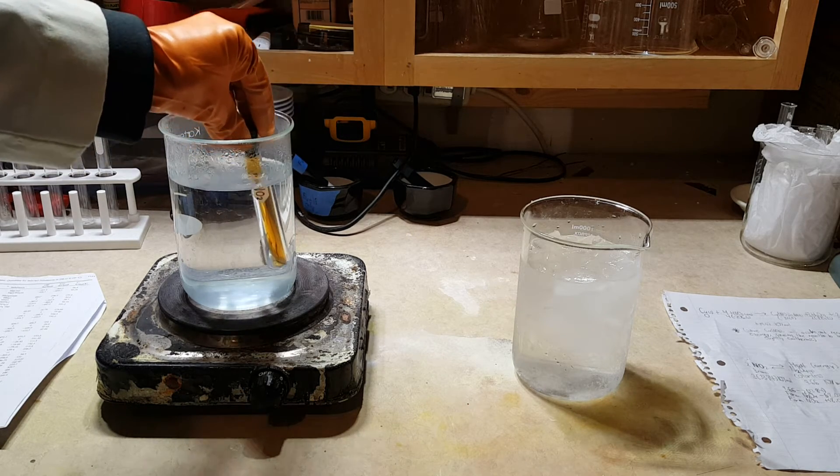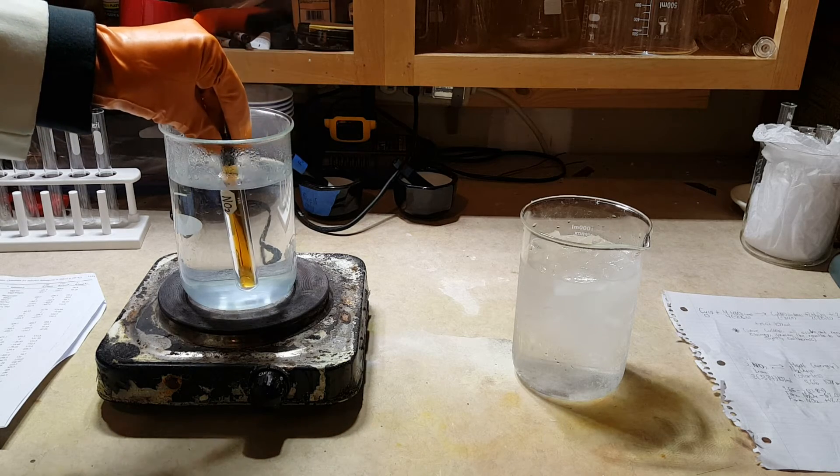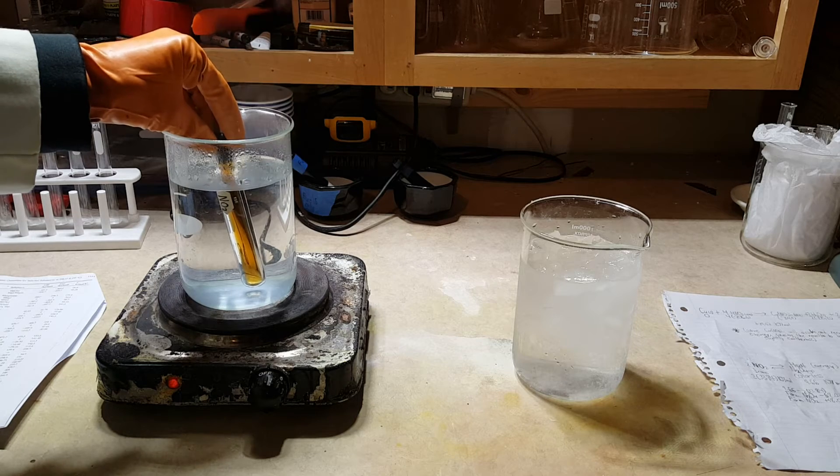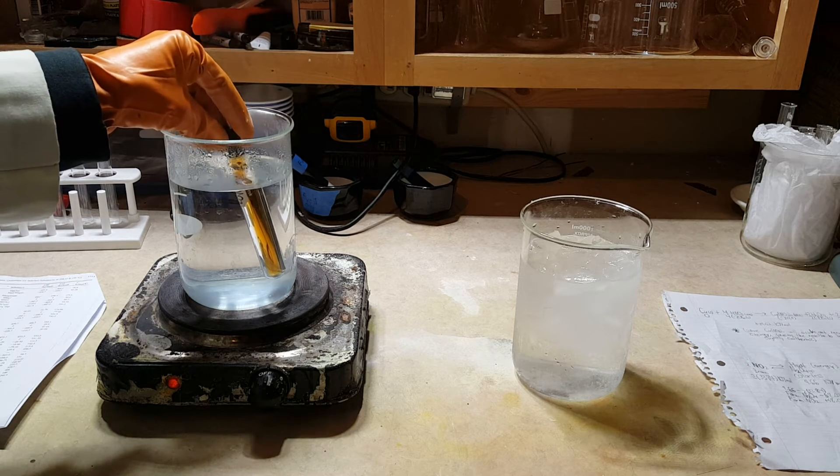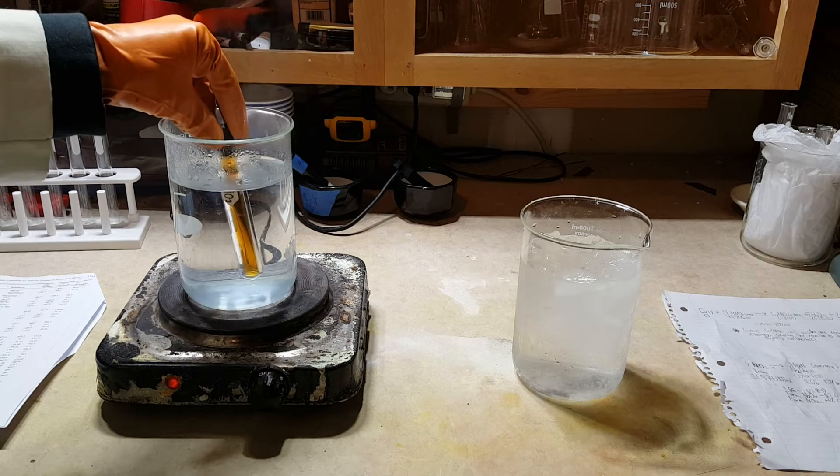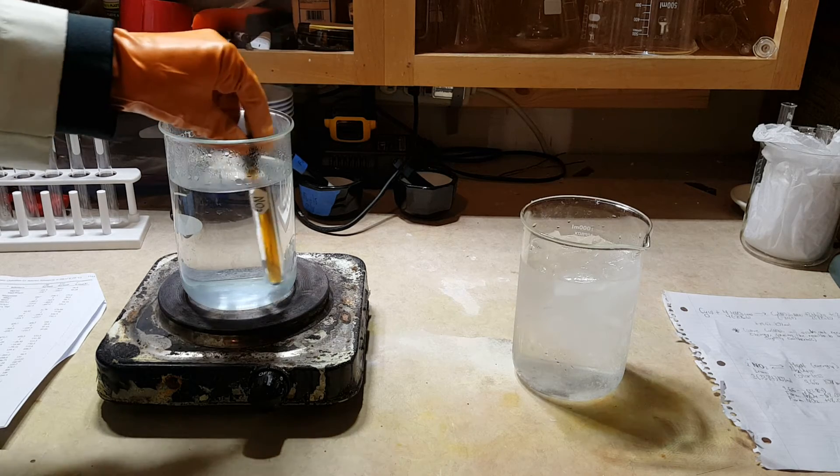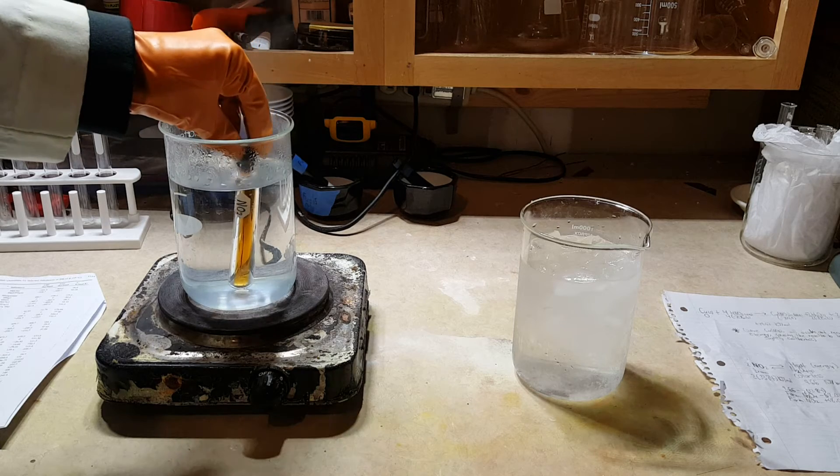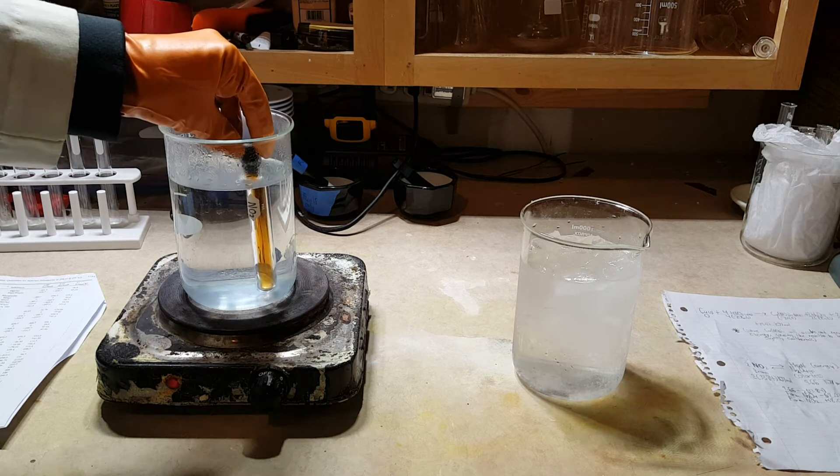So as you can see, our equilibrium is very quickly shifting towards our nitrogen dioxide. This is because we've added enough energy to break apart our dinitrogen tetraoxide. So that just forms two nitrogen dioxide molecules and turns our system a dark brown. So let me allow this to heat a little bit longer.